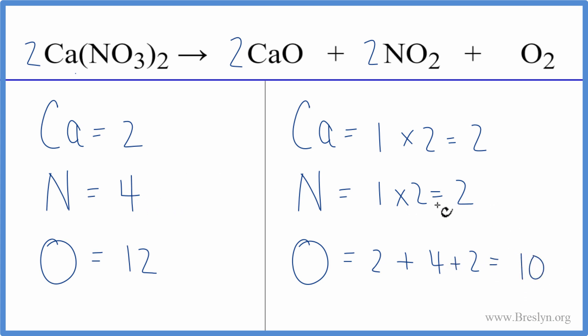We also need to update the nitrogen atoms. So let's do that. It looks like we have four here and only two here. So we need to double these. So we need to change our two to a four. So now we need to update the nitrogens and the oxygens. One times four, four nitrogens. Those are balanced.